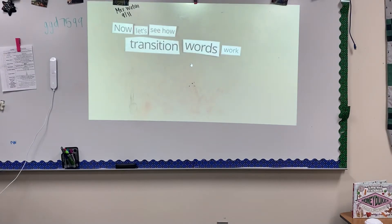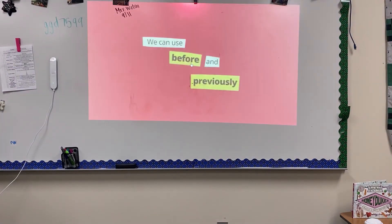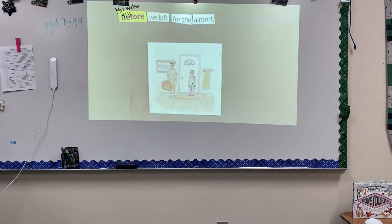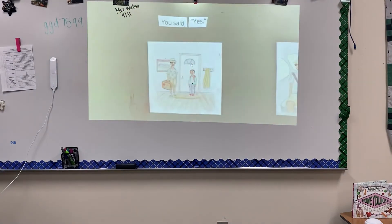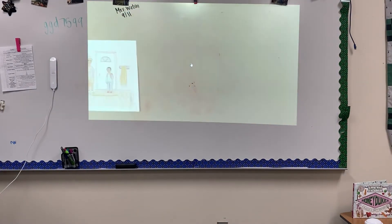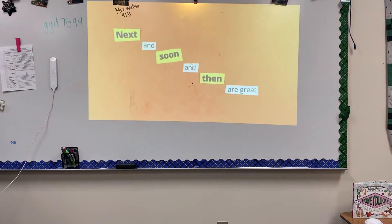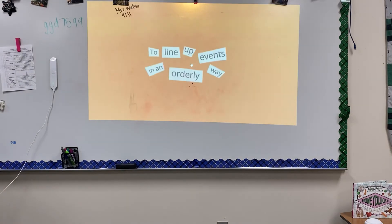Let's see how transition words work to show sequence like clockwork. We can use before and previously — that's if you want to say that something happened in the past. Like, before we left for the airport, I asked, are you sure you have your passport? You said yes. Next, we got in the backseat, and soon we were on our way in a taxi. Next, soon, and then are great to line up events in an orderly way.